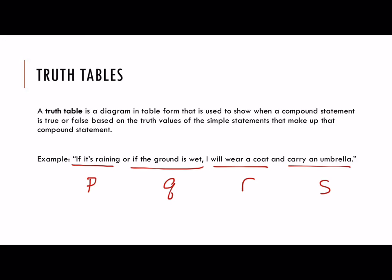Then the connectives: we have OR, which is this symbol, and AND, which is this symbol. Notice this is also an IF-THEN statement. It is IF these first two things, THEN I will wear a coat and carry an umbrella. So I also have a conditional here — IF this first piece, THEN this second piece.